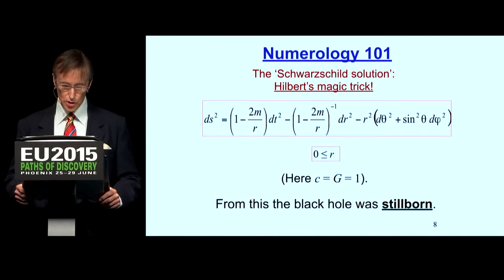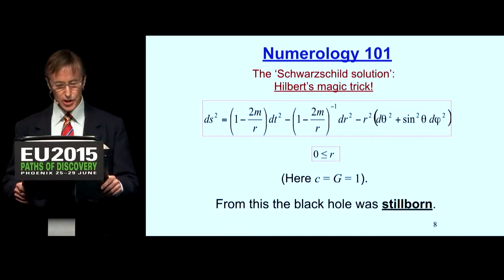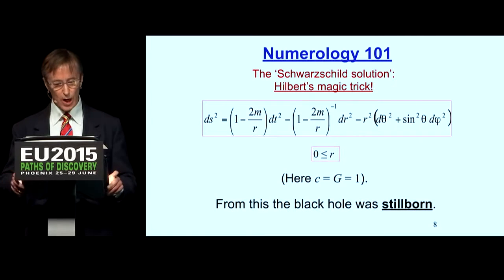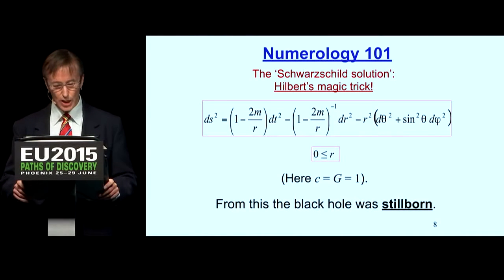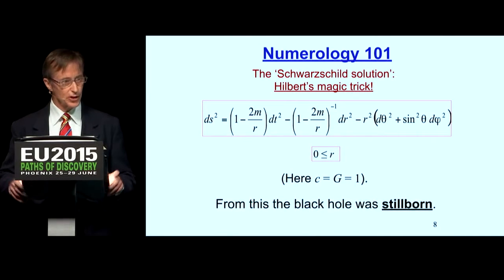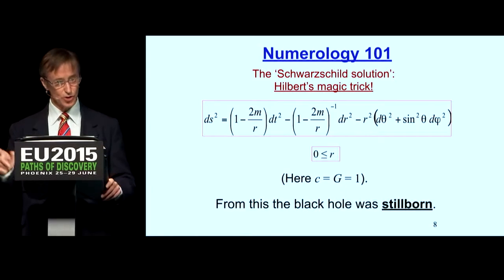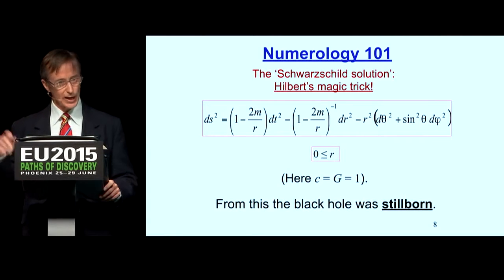This is the so-called Schwarzschild solution, but it's actually Hilbert's version — a magic trick by Hilbert. In this expression, c equals g equals 1, meaning the speed of light and Newton's gravitational constant are set to one and disappear from the equations. The small m in the equation is claimed to be the mass that is the source of the gravitational field described by Ricci equals zero — the mysterious mass that is taken out and then put back in.